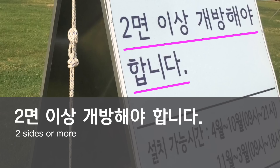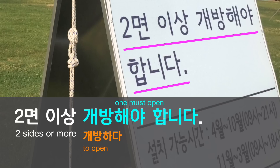개방해야 합니다. 개방하다 means 'to open' — it's a very formal word. And 개방해야 합니다 means 'one must open.' I'm sure you can guess one of the reasons they want you to keep at least two sides of your tent open: they don't want you doing too much private stuff inside. They want to keep the park family friendly.